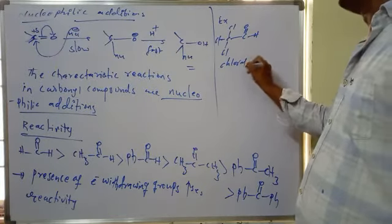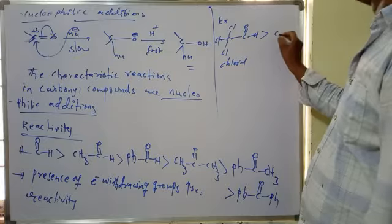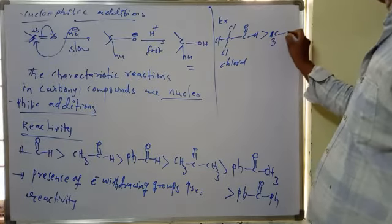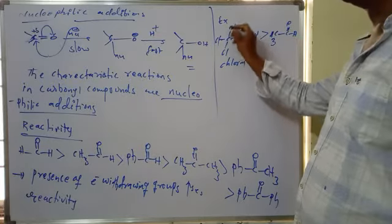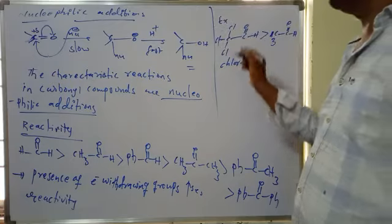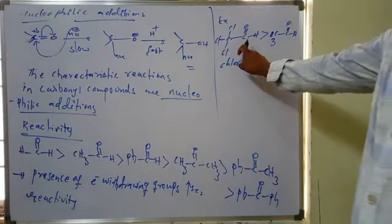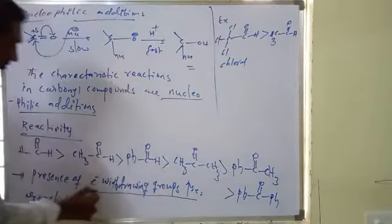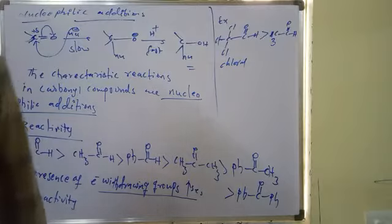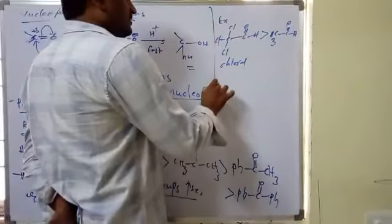Chloral is more reactive than acetaldehyde because the three chlorine atoms have a minus inductive effect and withdraw electrons. So the presence of electron-withdrawing groups increases reactivity.